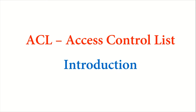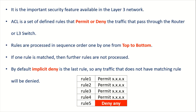ACL is an Access Control List. It's an important security feature available in our Layer 3 network. ACL is a set of rules that either permit or deny the traffic that passes through the device. These rules are processed in sequence order, one by one, from top to bottom.